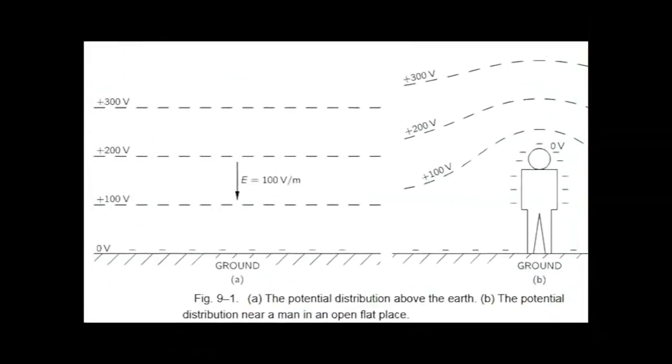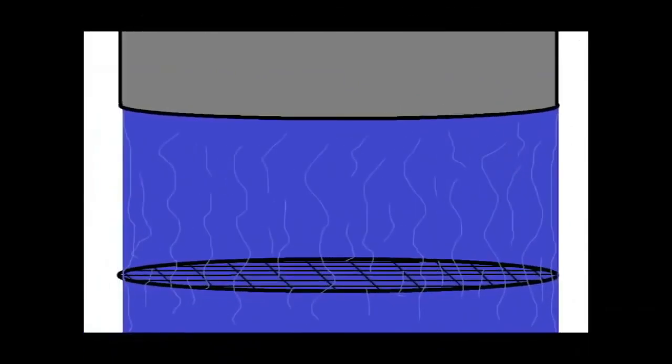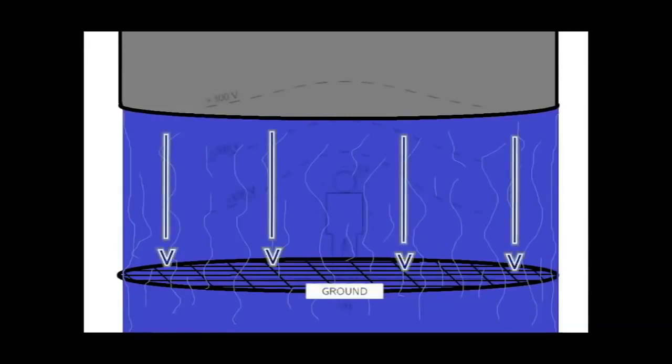One might think that the attraction from above and below would cancel out completely, but it is the electrostatic gradient that creates a flow from the positive above to the negative below. Think of the Earth as a flat strainer, and there is a constant flow of water from above moving very slowly, always applying a force in a downward direction.